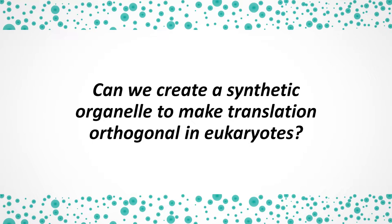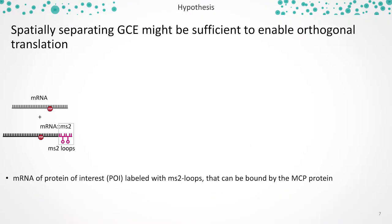To do this in eukaryotes, we hypothesized that it might be possible to create a synthetic organelle that exclusively translates chosen mRNAs. The first thing for this to work is that the mRNA of our protein of interest needs to be distinguishable from endogenous mRNAs. To achieve this, we tagged our mRNA with MS2 loops in the untranslated region, which can be specifically bound by the MCP protein. As this system is derived from a bacteriophage, it doesn't occur in any eukaryotic protein.